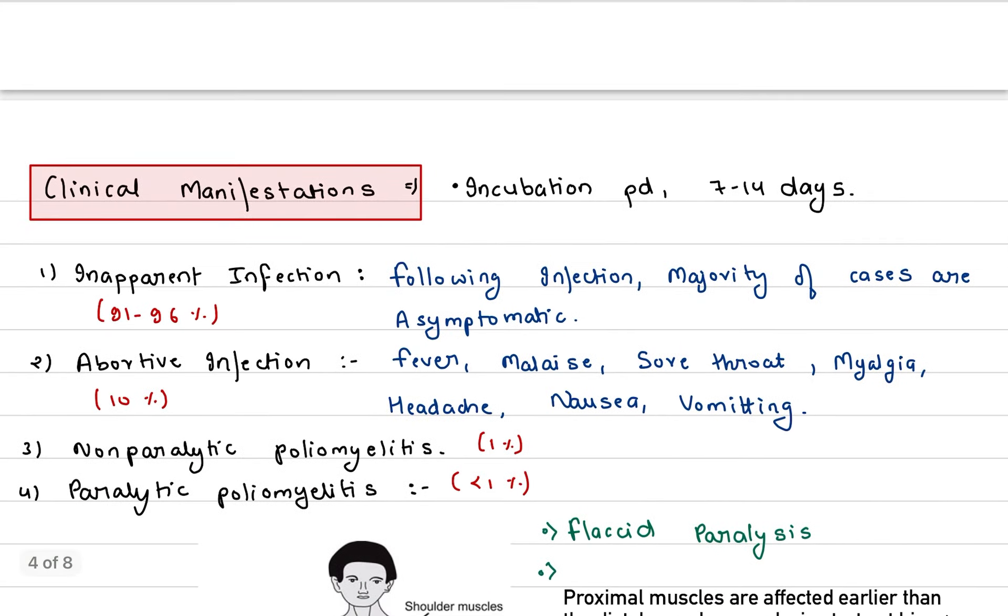From bloodstream, it goes into the brain and neurons, which mainly affects the anterior horn of the spinal cord, which remains the main site. After that, it causes death of neurons, which leads to flaccid paralysis. Now let's talk about clinical manifestations.